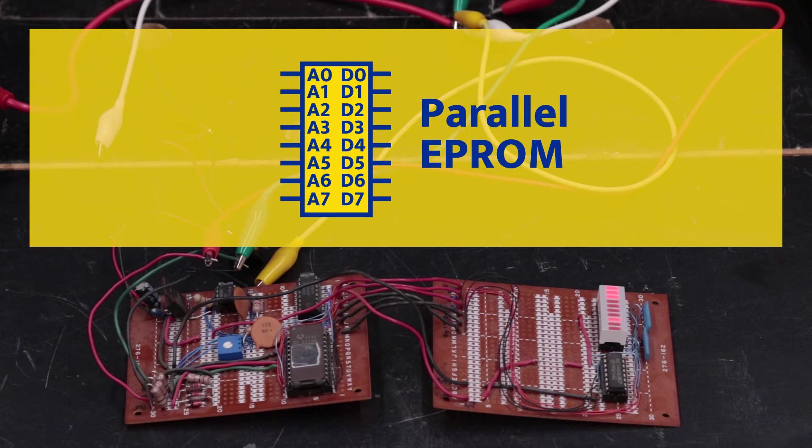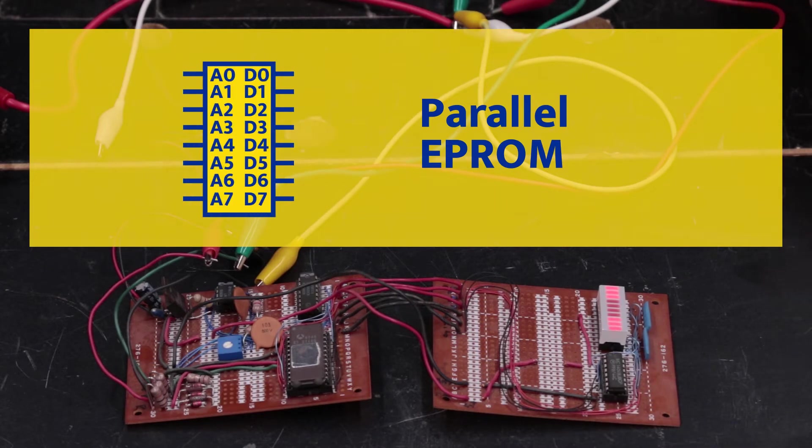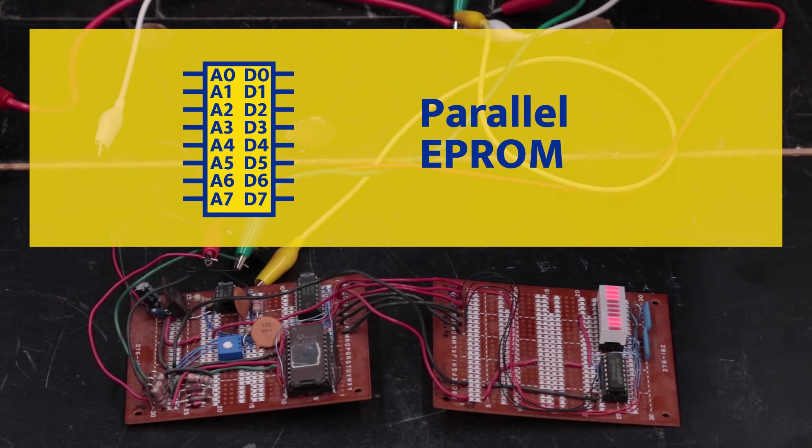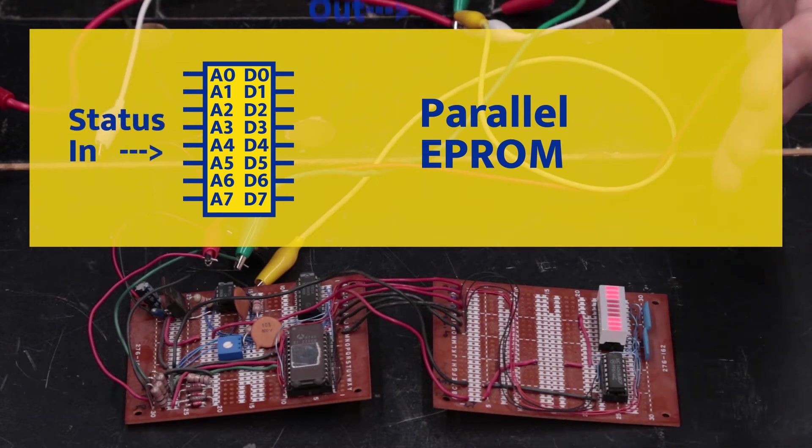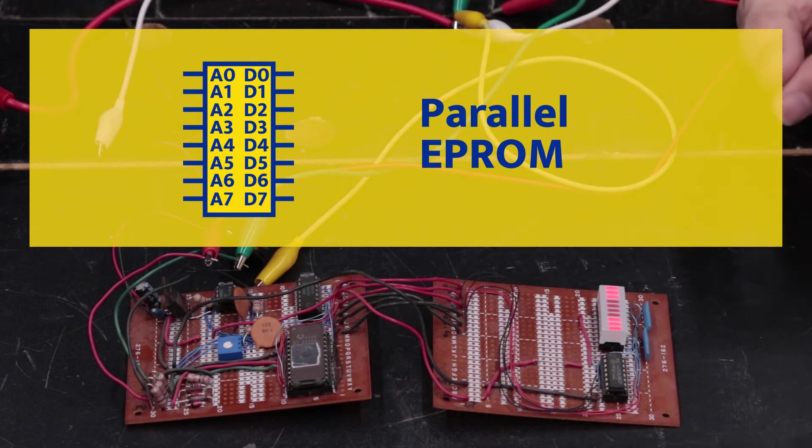Usually you have eight data lines out and any number of address lines going in depending on the size of the EEPROM. Typically we think about an EEPROM as you give it an address and you get data out. Another way of looking at it which is kind of the same thing but a little bit different is you have status inputs and you have status outputs. It's really kind of the same thing but it's looking at it from a slightly different perspective. Instead of looking at it through a sequential address space thing like a computer would normally use it, you're looking at it from an input mapping to an output just table perspective. And that's really how this project approaches that.